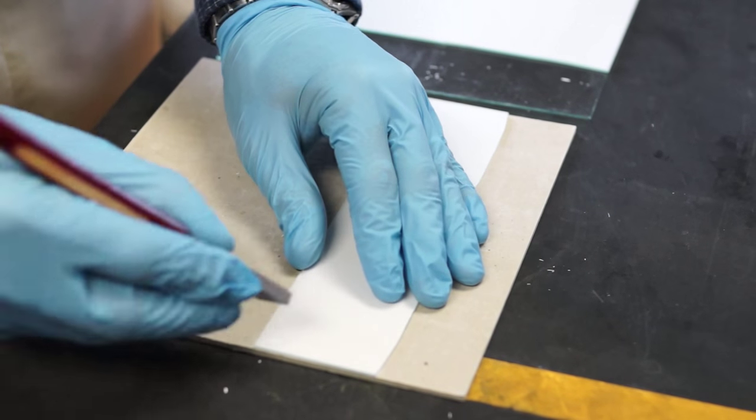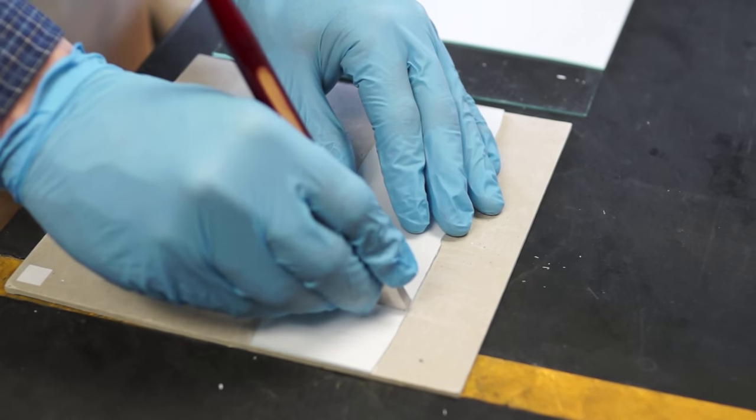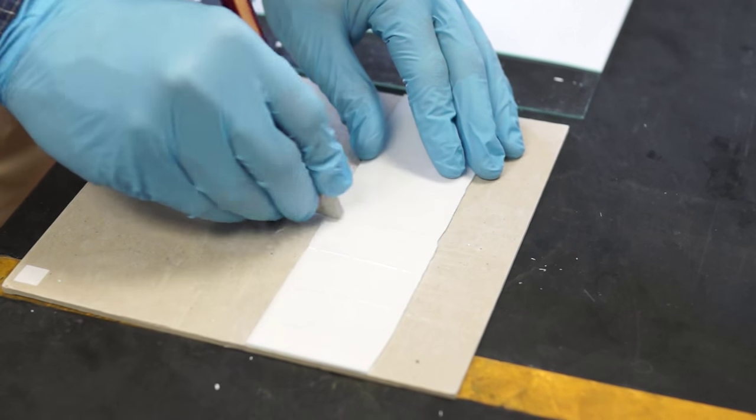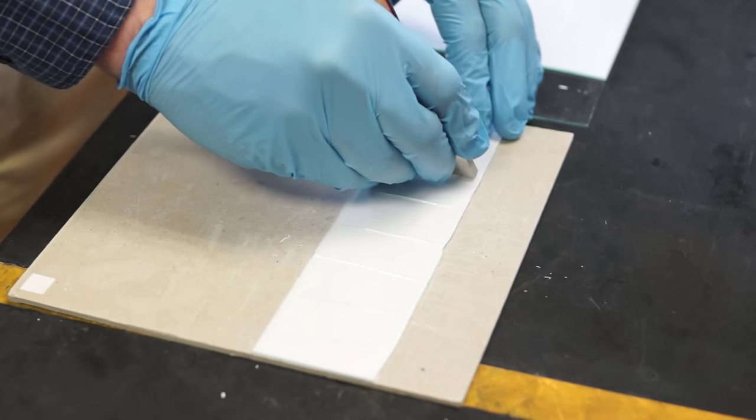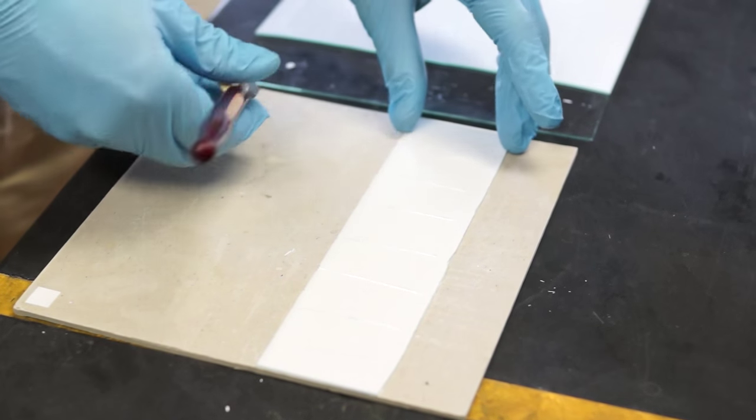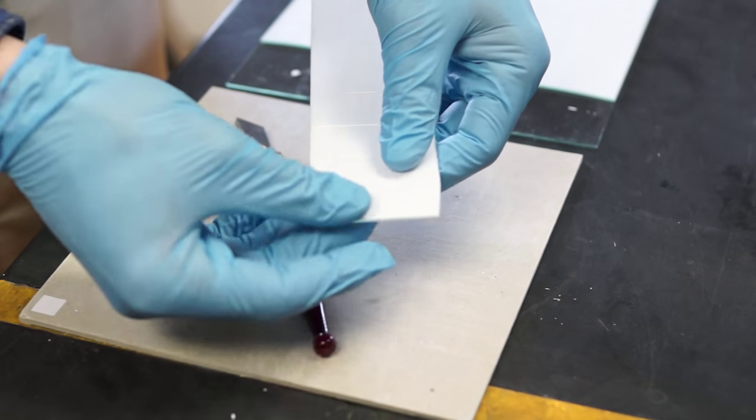We'll repeat the process to make our smaller TLC plates for everyday use. To cut the glass, score the glass, and then gently lift up and break apart the TLC plates.